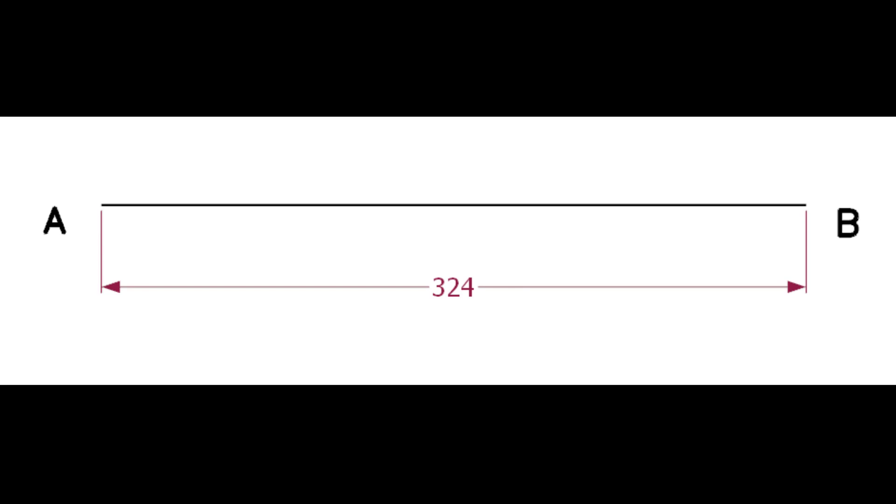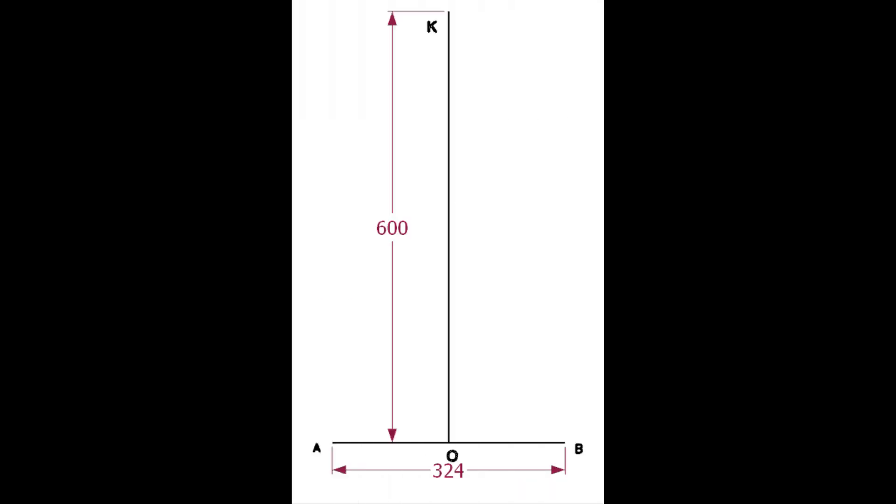Draw a line AB of length 324 millimeters, that is the OD of the pipe. Draw the line OK, the length of the line is not important, but must be more than the pipe diameter.